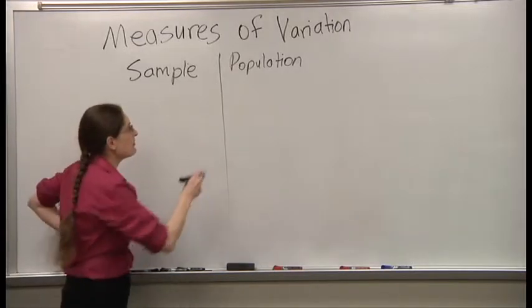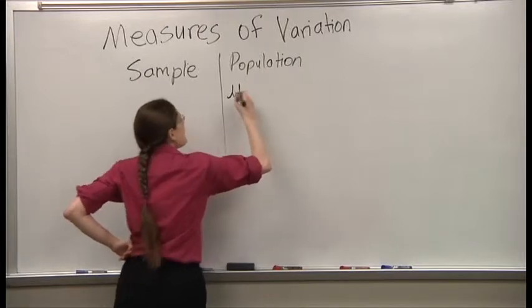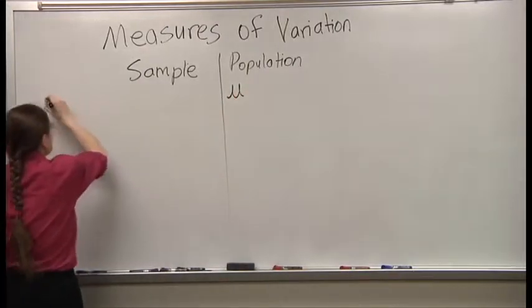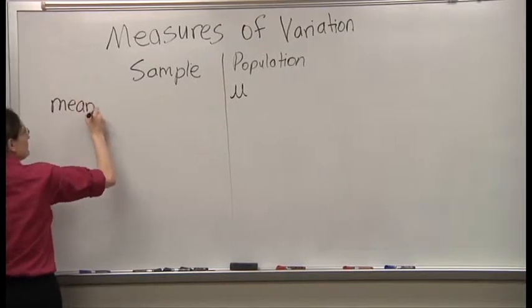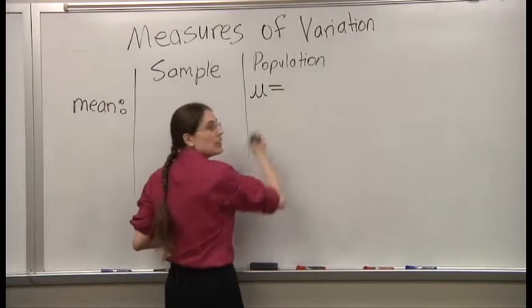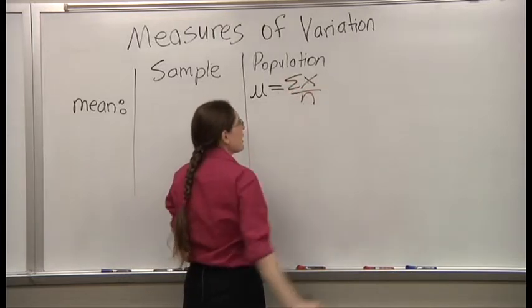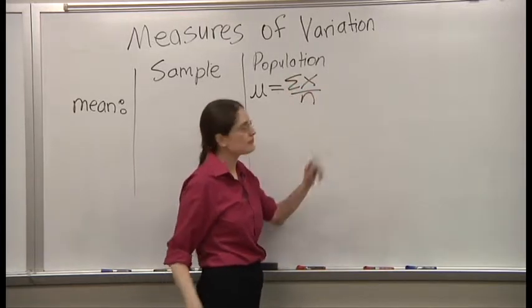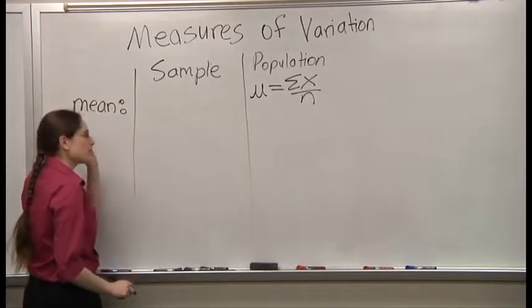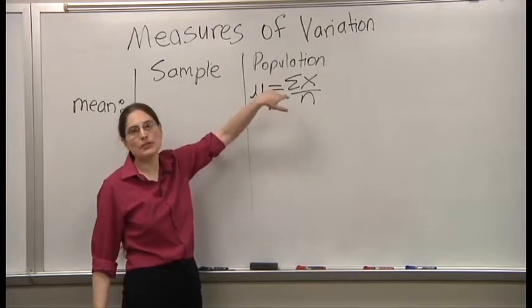We've seen this is for mean. Mu equals add them all up, divide by how many you have. But this is if you're finding the whole population.